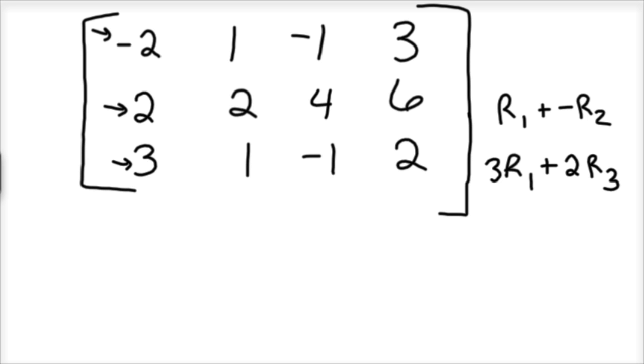So my row 1, I'm just going to leave alone for now. So 1, negative 2, 1, negative 1, 3. My row 2 now, if I add row 1 and row 2, see, I would have already made a mistake. Because we can't do negative row 2, just add them together. So we're just going to add row 1 to row 2, so we get a 0 there. So row 1 and row 2 now gives you 0, because negative 2 plus 2 is 0. 1 plus 2 is 3. Negative 1 plus 4 is 3. And 3 plus 6 is 9.